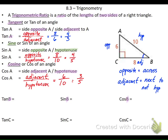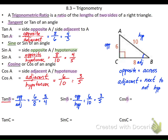From angle B, the tangent of B is opposite over adjacent. The opposite side from B is 6, and the adjacent side is 8, so 6 over 8 reduces down to 3 fourths. Sine is opposite over hypotenuse: the opposite side is 6 and the hypotenuse is 10, which reduces down to 3 fifths. And cosine is adjacent over hypotenuse: the side adjacent to angle B is 8 and the hypotenuse is 10, so it reduces down to 4 fifths.